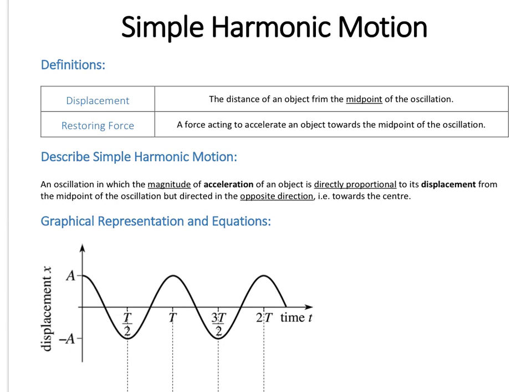So let's actually describe what we mean by simple harmonic motion. It's an object that's in oscillation, and the magnitude of the acceleration of the object is actually directly proportional to its displacement. So that's the magnitude, but it's always in the opposite direction. So if it's displaced to the right, the acceleration is back towards the left, back towards the middle point of the oscillation.